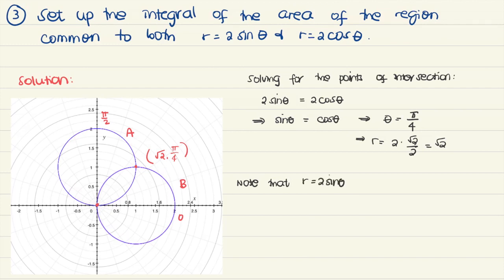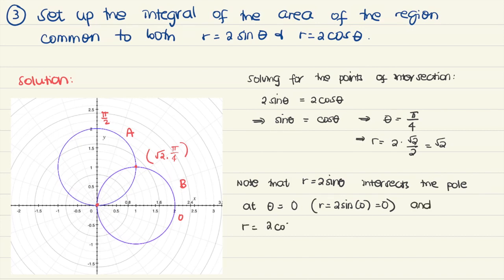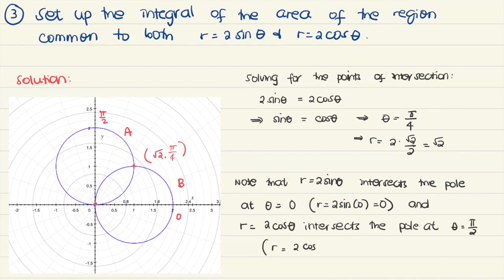We notice that r equals 2 sine theta intersects at the pole at theta equals 0, because r equals 2 sine 0 is 0. And r equals 2 cosine theta intersects at the pole at theta equals pi over 2, since 2 cosine pi over 2 is equal to 0. So they both intersect the origin but not at the same time or same theta. This point is both (0, 0) and (0, pi over 2).